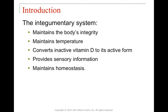The integumentary system is responsible for being the first protective layer of the body against any sort of attack, so it maintains the body's integrity and helps keep out foreign microbes. It's also responsible for temperature maintenance, converts inactive vitamin D to its active form in the presence of sunlight, provides sensory information — like whether you've touched something hot, cold, or sharp — and helps maintain homeostasis by being that protective barrier.